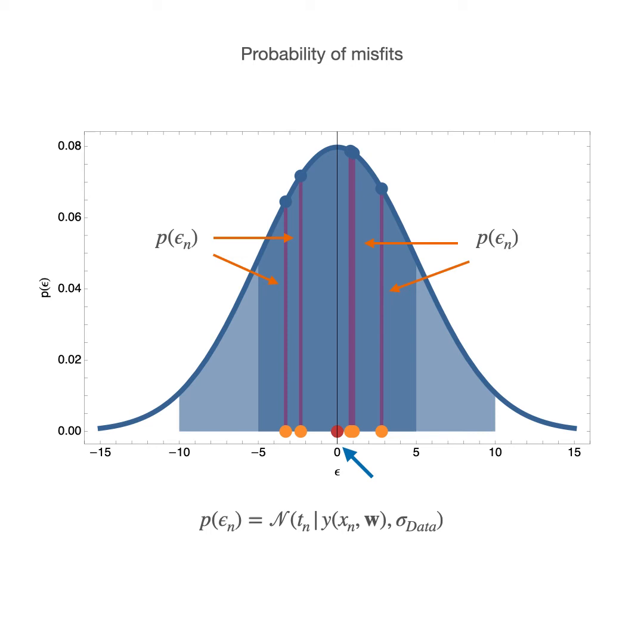The red dot is the collapsed model function. And this is the probability distribution of the misfits. The target values are the orange dots on the horizontal axis. And the horizontal distances from the red dot are the misfit values, epsilon.